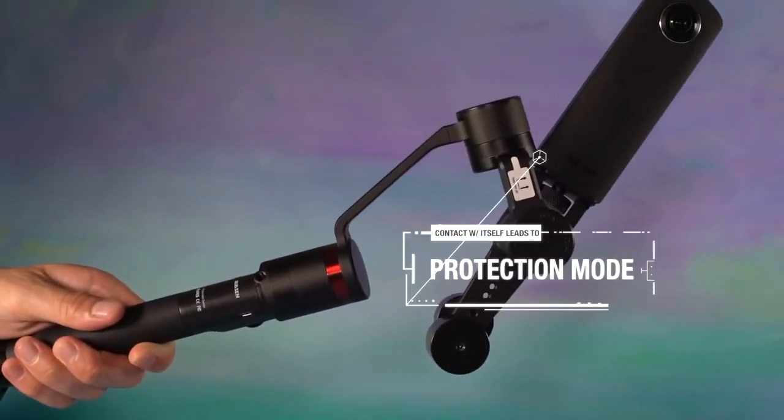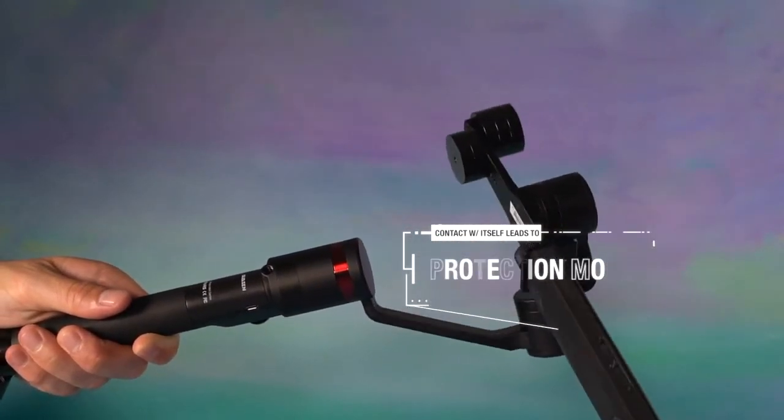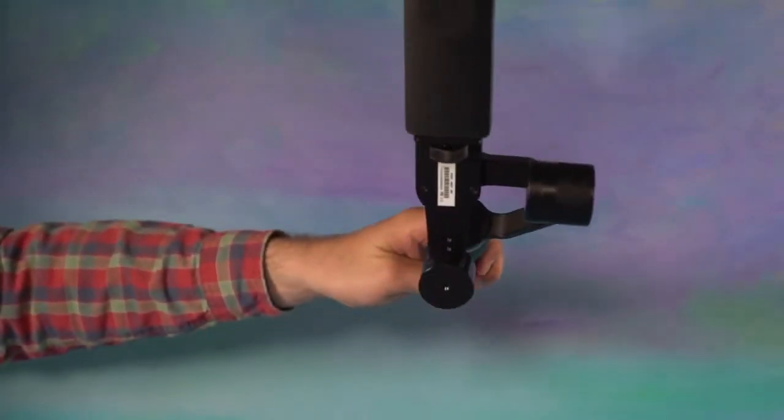If the stabilizer comes in contact with itself, the motors will enter protection mode and turn off the power. Simply restart the stabilizer to regain use.